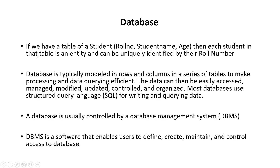For example, if we have a table of students with roll number, student name and age, then each student in the table is an entity and can be uniquely identified by their roll number, and their roll number is the attribute of the student.